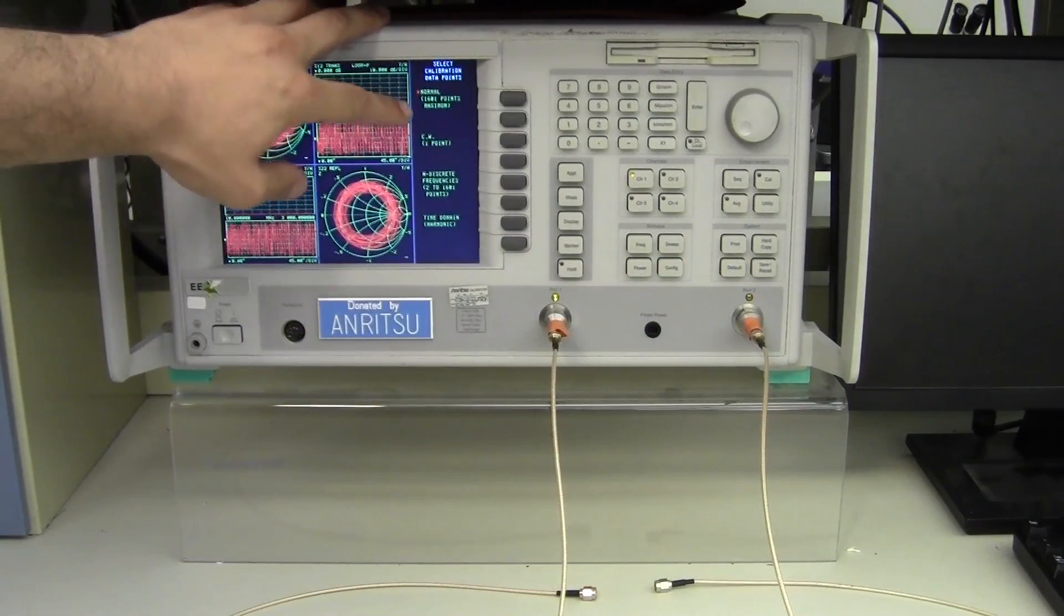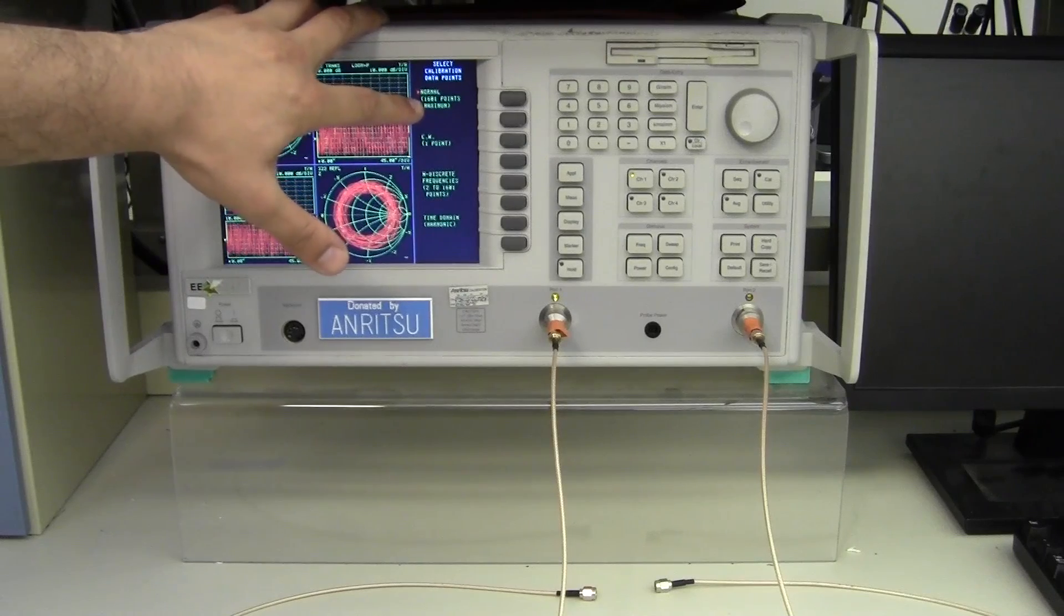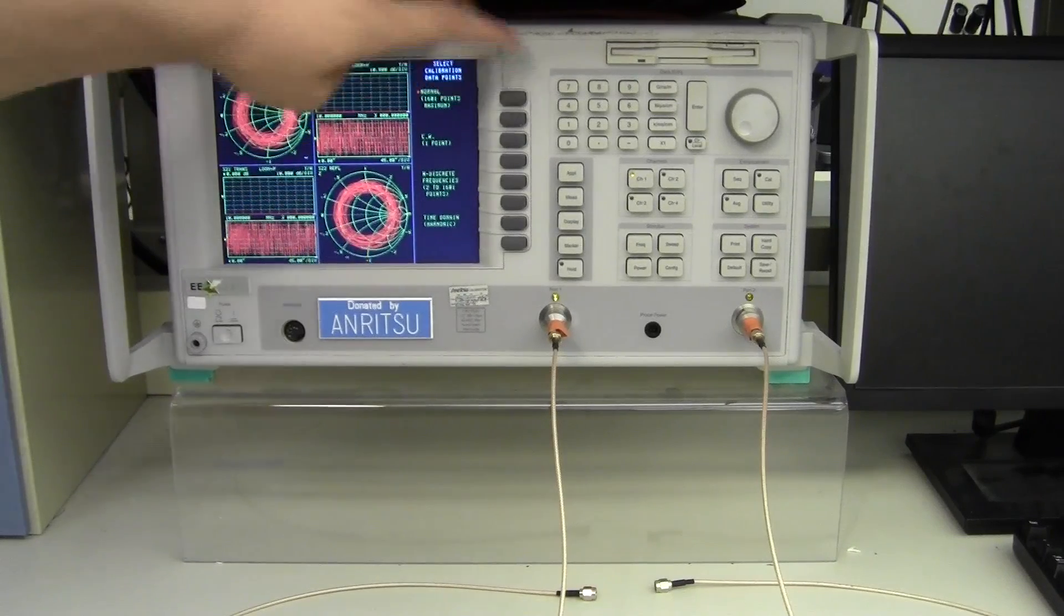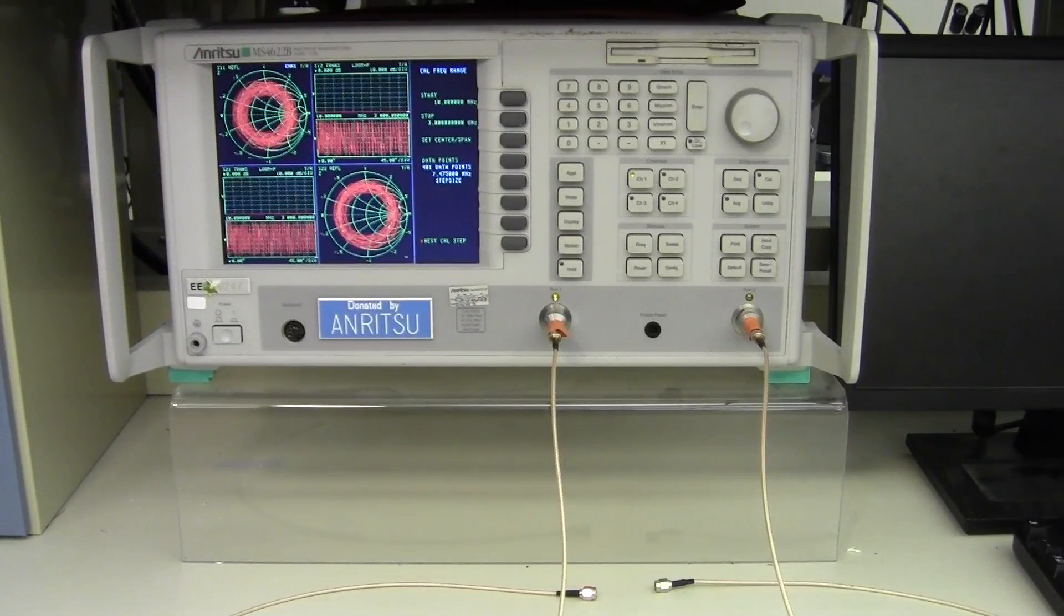We want to perform a normal broad spectrum 1600 and one point calibration, and it then asks for our frequencies of interest. By default it starts at 10 megahertz and goes all the way up to 3 gigahertz, which is the tool's full capacity.